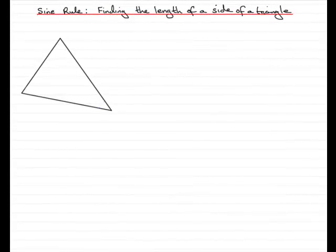Hi. Now in this video tutorial what I want to do is show you how we can use a particular rule called the sine rule for finding the length of the side of a triangle. And we usually use this rule when we're dealing with non-right angle triangles, triangles that don't have an angle of 90 degrees in them.